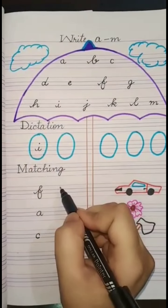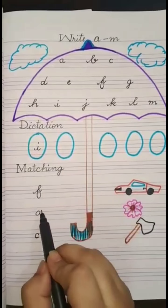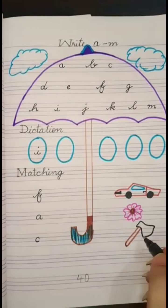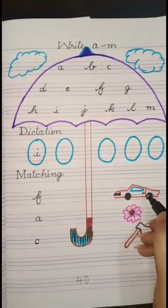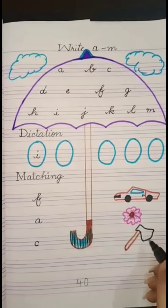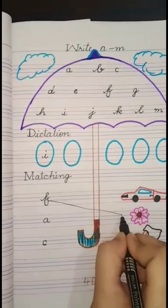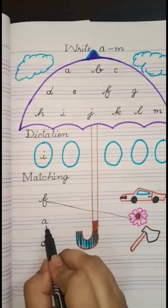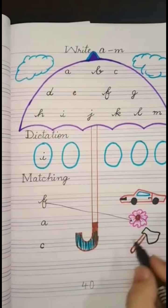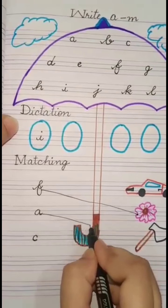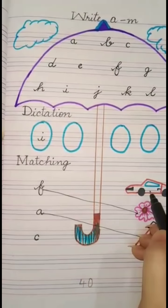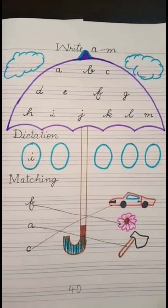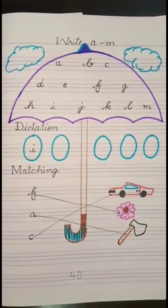Second topic is matching. We have to do matching with letters and pictures with the correct word. First of all, fa — fa, flower or eggs? Yes, flower. We have to match fa with flower. You have to do it at home with a scale. The second word is a — what is this word? Car or eggs? Yes, eggs. We have to join a with egg. Last, we have to match the car with car.